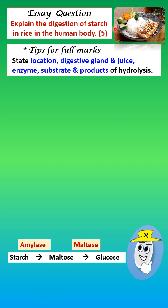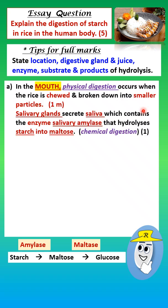Let's learn the technique of answering essay questions. Here's the question: explain the digestion of starch in rice in the human body — five marks. Here are the tips to get full marks for questions on digestion: state the location of the organ, the digestive gland and juice, the enzyme, the substrate, and the products of hydrolysis.